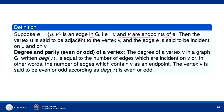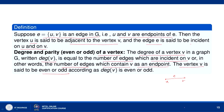Suppose E equal to UV is an edge in a graph G. Then U and V are adjacent to each other and are the endpoints of E. The vertex U is called adjacent to vertex V and edge E is said to be incident on U and V. The degree of a vertex V, written as degree(V), is equal to the number of edges incident on V, or in other words the number of edges which contain V as an endpoint. The vertex V is said to be even or odd according as the degree of V is even or odd.